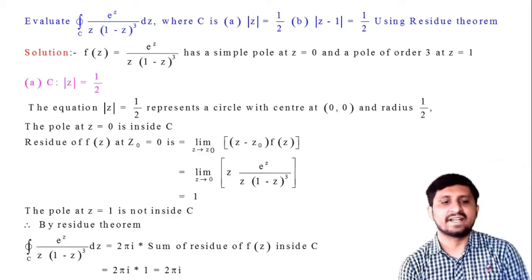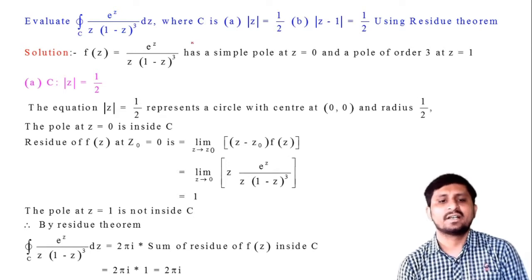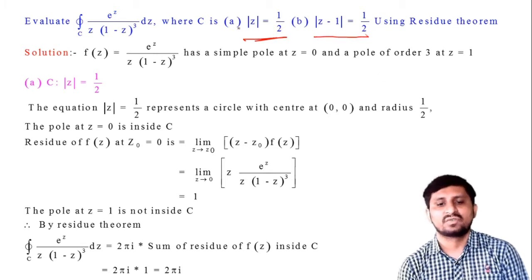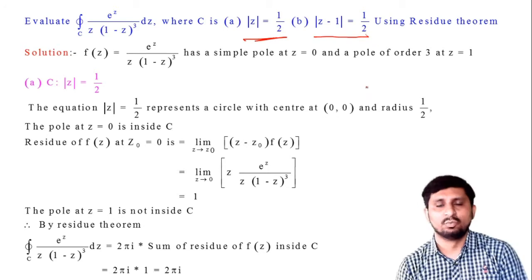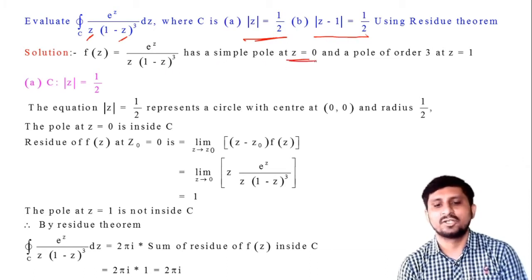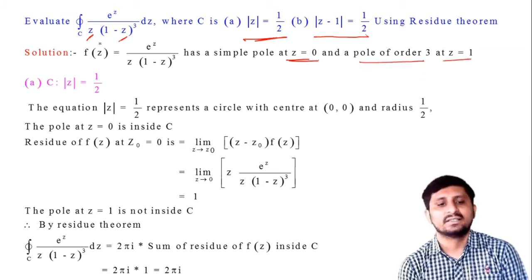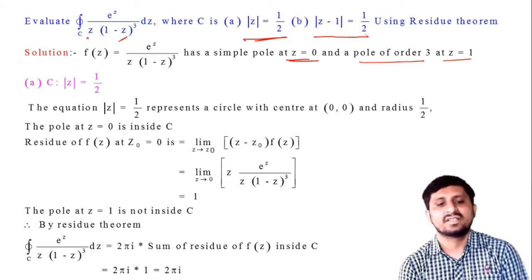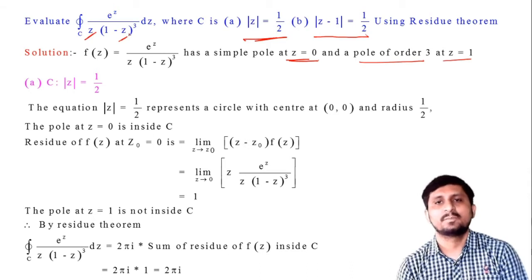Evaluate the integration of e^z over z(1−z)³ dz. There are two circles given: the first circle is |z| = 1/2 and the second circle is |z−1| = 1/2. First we find the poles — the denominator becomes 0 at z=0 and z=1. So the function has a simple pole at z=0 (since z appears once in the denominator) and a pole of order 3 at z=1.